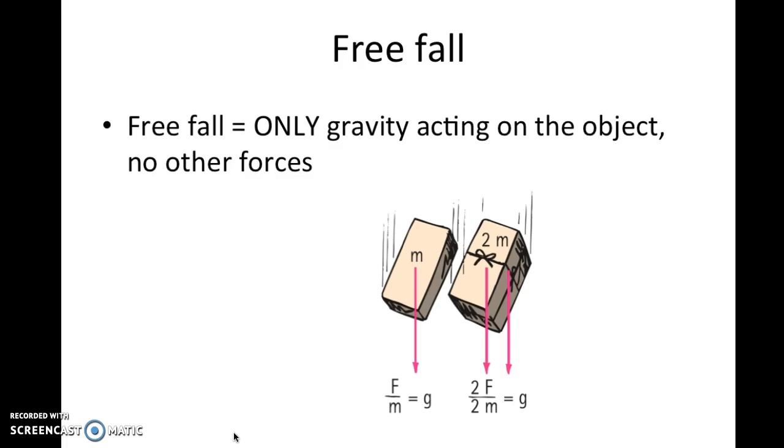Now recall that a couple of weeks ago we talked about freefall. When an object is in freefall, the only force acting on it is gravity. There are no other forces acting on the object, meaning that gravity is the net force on the object. Since there is a net force, there is acceleration, and we call that the acceleration due to gravity, or 10 meters per second squared.